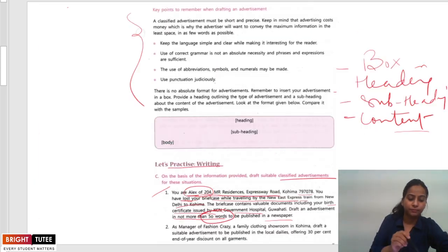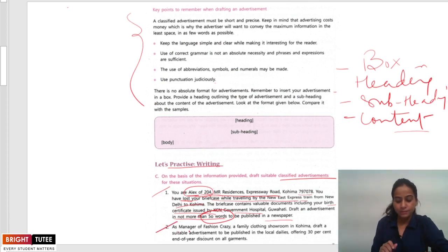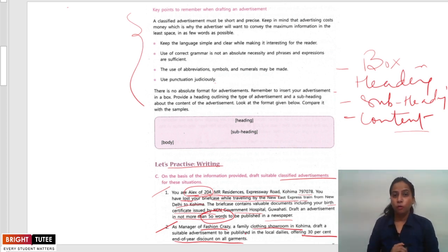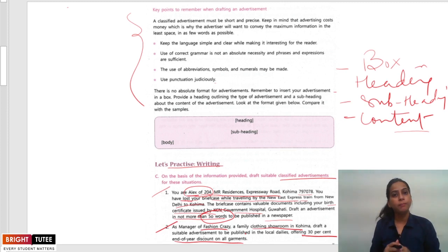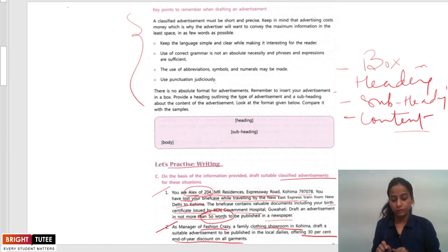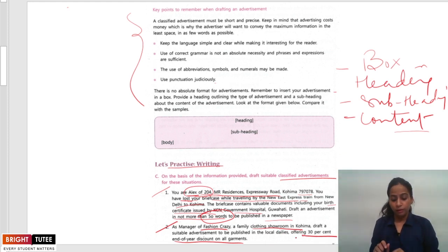Now let's move to the second practice question. As manager of Passion Crazy, a family clothing showroom in Kohima, draft a suitable advertisement to be published in the local dailies offering 30% end-of-year discount on all garments. Read it thoroughly — you are the manager of Passion Crazy, a family clothing showroom in Kohima, and you need to advertise a 30% end-of-year discount. You might have seen such advertisements in newspapers, hoardings, or elsewhere where showrooms offer seasonal discounts.